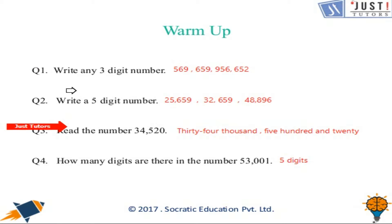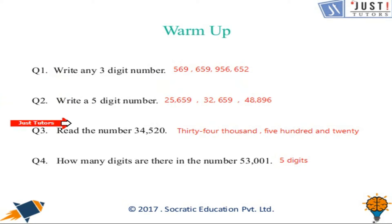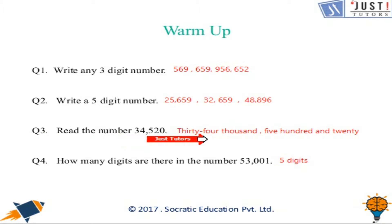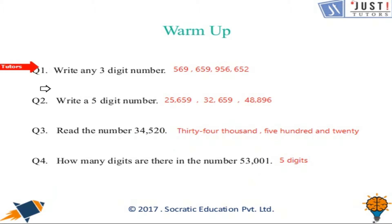For question number 1 and question number 2 you can have many possibilities, so you can write a few numbers on your own as well. We read the number like 34,520. Pat your back if all of your answers are correct — you are doing amazingly well!